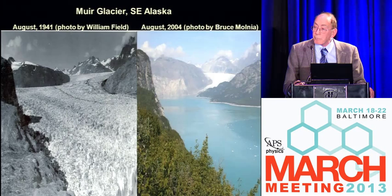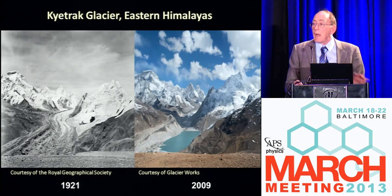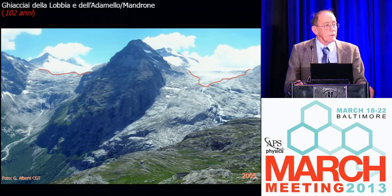If you go to the Himalayas, it's very hard to find old photos, but here's one of a glacier taken back in 1921 and what it looked like in 2009. When you look at these pictures, ice is just water on land — when it melts, it goes into the world's oceans and contributes to sea level rise. Over in the Alps, a photo from 1903 and a recent photo in 2005 — 99% of the glaciers are retreating in the Alps.